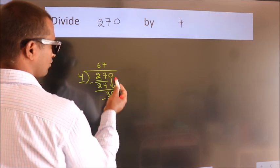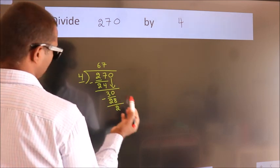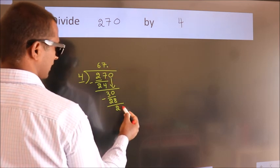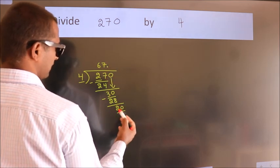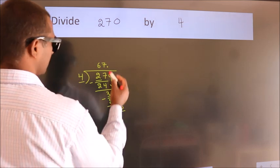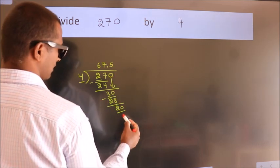After this, no more numbers to bring down. So what we do is we put a dot and take 0. So 20. When do we get 20 in the 4 table? 4 times 5 is 20.